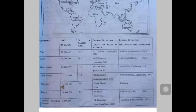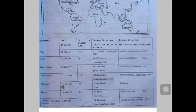After Asia we have Africa, which is second in number. The highest elevation point of Africa is Mount Kilimanjaro in Tanzania. The lowest elevation point of Africa is Lake Assal in Djibouti, which is also known as the Horn of Africa.